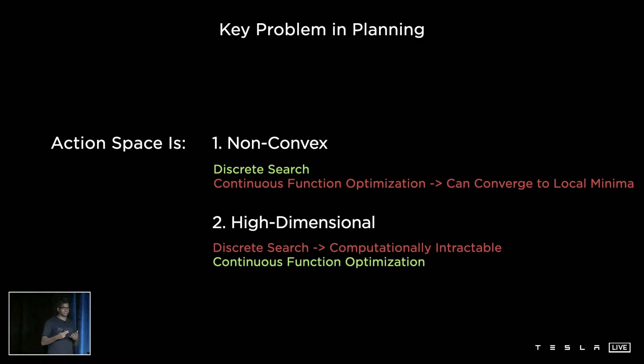On the other hand, for high-dimensional problems, discrete search sucks because it is discrete, it does not use any gradient information, so it literally has to go and explore each point to know how good it is. Whereas continuous optimization uses gradient-based methods to very quickly go to a good solution.